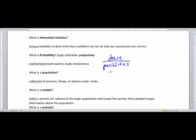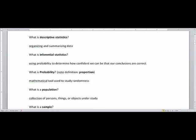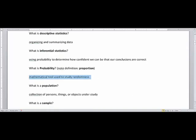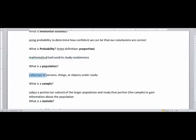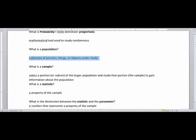What is a population? A population is the collection of persons, things, or objects under study. To contrast a population, it's important to talk about a sample. A sample is to collect a portion or subset of the larger population and study that portion to gain information about the population.